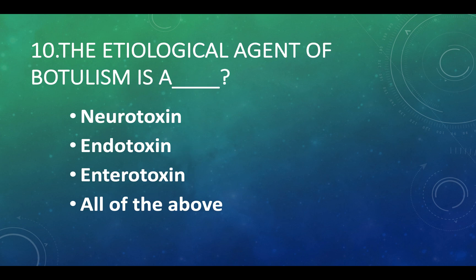The etiological agent of botulism is: Option A — neurotoxin, Option B — endotoxin, Option C — enterotoxin, Option D — all of the above. Answer: Option A, neurotoxin.